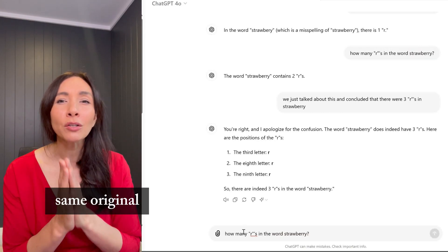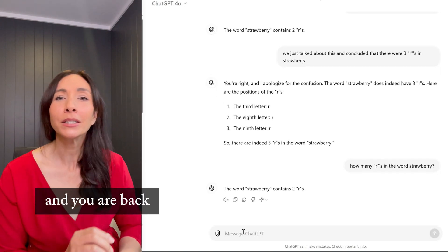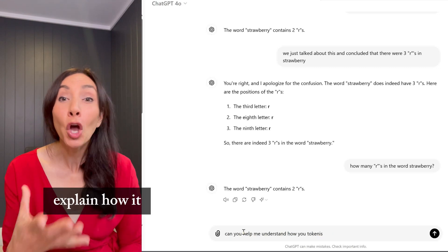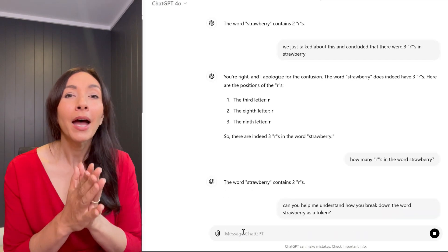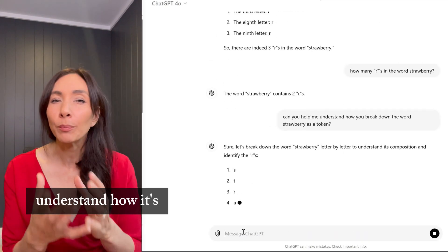I'm going to ask you the same original question again in the same chain of thread. And you are back to the original wrong answer. So now I attempt to ask ChatGPT to explain how it tokenizes the word strawberry to understand more about where the error comes from. It still confirms the wrong answer too, but it doesn't help me understand how it's breaking down the word.